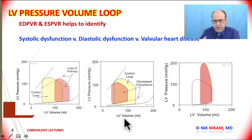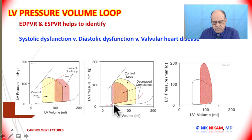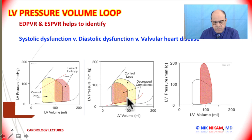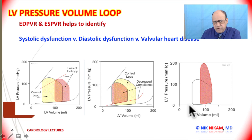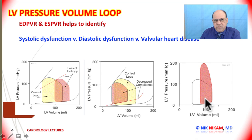Contrast that with a patient with hypertrophic cardiomyopathy, who has a small ventricular volume and also has increased left ventricular end diastolic pressure. With a small volume they also have a small stroke volume, but their systolic function is fairly preserved. This represents diastolic dysfunction.